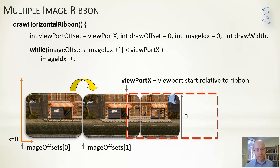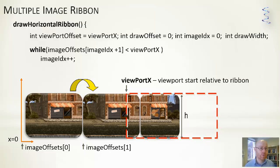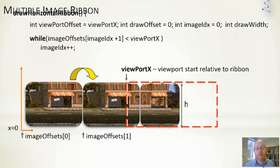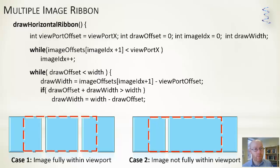First we need to find the first image to draw. We use a while loop: while the start of the next image (image_index + 1) is less than the viewport start (vs), we keep advancing the image index. This finds the image whose ending falls within the current viewport — the first one we want to draw. We'll handle looping to avoid running off the end of the array.